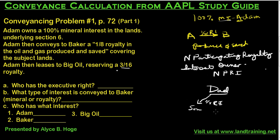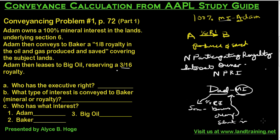The reason it's called non-participating is because only the mineral interest owner has what we call the executive right — which simply means the right to execute the lease. The royalty interest owner does not have the right to sign a lease. He's not going to be entitled to bonus payments, delay rental payments, or shut-in royalty payments. All of that goes to the mineral interest owner. The question of who has the executive right is simply asking: who has the right to sign a lease — the mineral interest owner or the royalty interest owner?